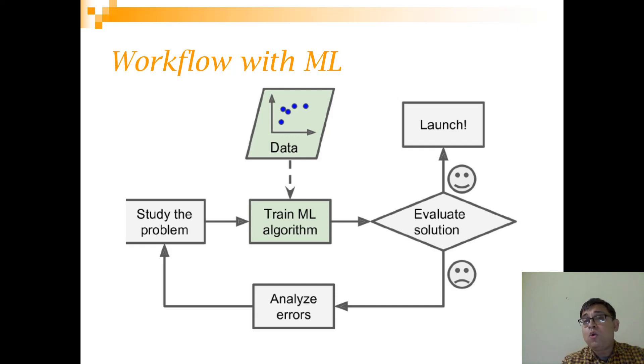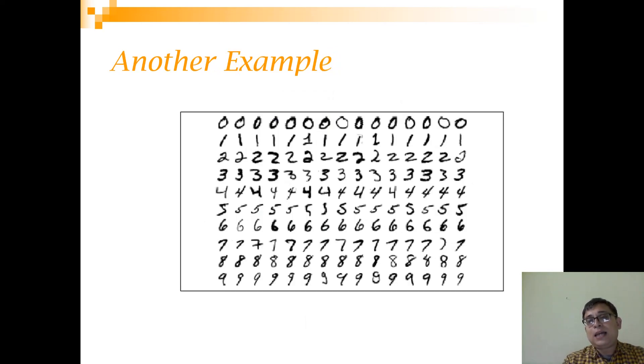There is no explicit rules now. The data is actually giving the rules. Let's look at another such example. Let's say that you have been again asked to write a program which takes an image of a handwritten digit as input and it classifies what digit it is—is it zero, one, up to nine, what digit it stands for?